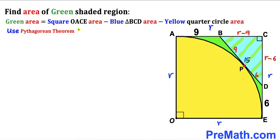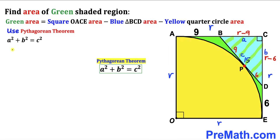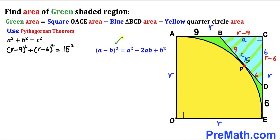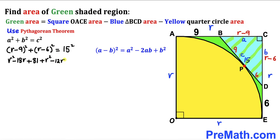We apply the Pythagorean theorem: a² + b² = c², where a = (r − 9), b = (r − 6), and c = 15. Expanding using the identity (a − b)² = a² − 2ab + b², we get: (r − 9)² + (r − 6)² = 15², which gives r² − 18r + 81 + r² − 12r + 36 = 225.